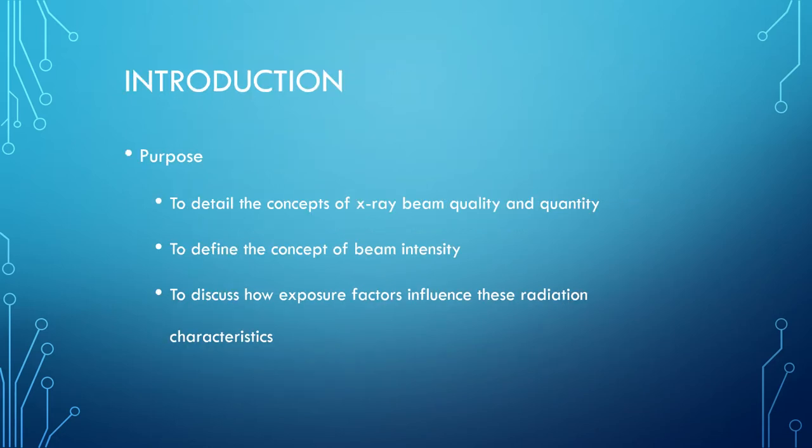Additional objectives include: describe how milliamperage affects density; explain how exposure time and milliamperage are related; describe how kilovoltage, milliamperage, exposure time, and source-to-receptor distance influence x-ray beam intensity; calculate an example using the inverse square law; and explain how the half value layer determines the penetrating quality of the beam. The purpose of this chapter is to understand x-ray beam quality and quantity.